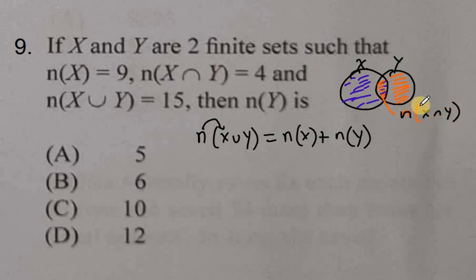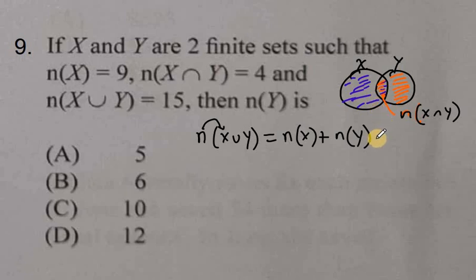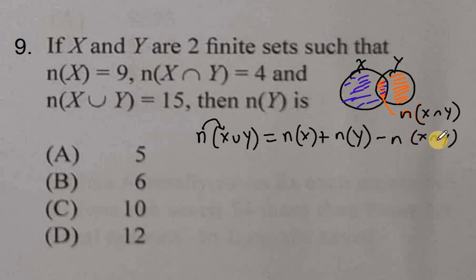We count the intersection twice: once when we count set X, including the middle, and once when we count set Y, including the middle again. So we have to take out one of the intersection counts. In other words, this portion that we counted twice — we take out one of them — which is symbolized by subtracting N, the number of elements in X intersect Y. So: number of elements in X plus number of elements in Y, minus the number of elements in the intersection.